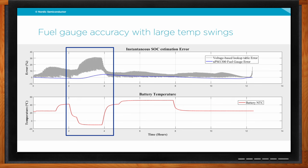With large temperature swings tested — from 40°C down to below zero — the OCV-based estimation spikes to over 30% error, while the Nordic solution stays below 5% error.